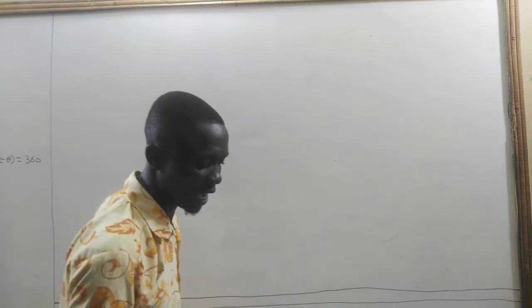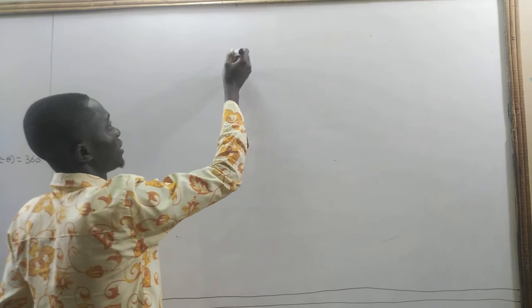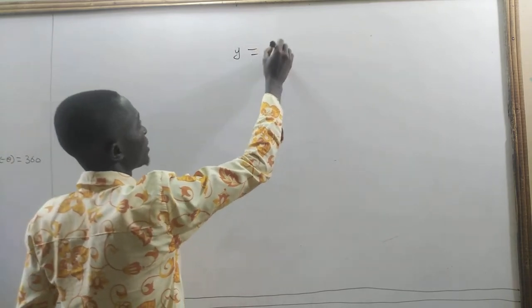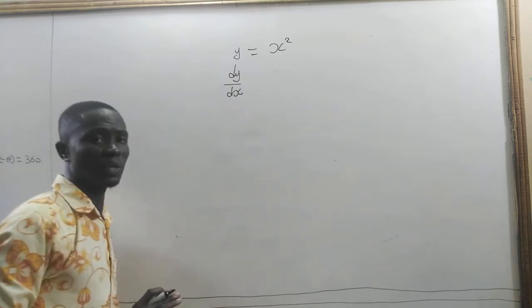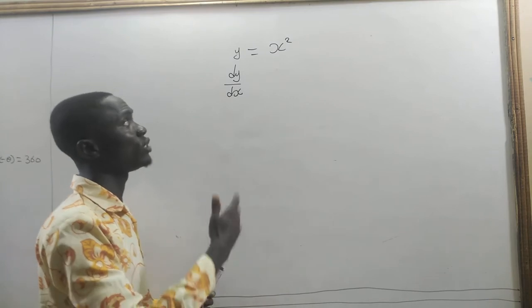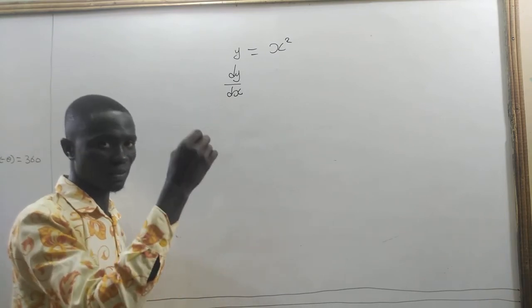We have different notations that we use when doing higher order derivatives, depending on the examiner or the person giving the question. We look at Leibniz's notation, Euler's notation, and Lagrange's notation. Under Leibniz's notation, if you have y equal to x squared, then dy/dx is Leibniz's notation, and this implies that you differentiate y only once.